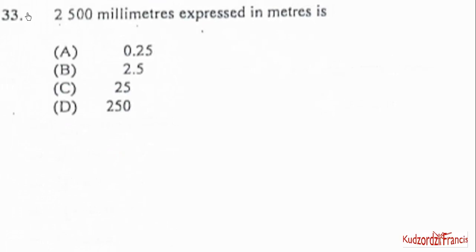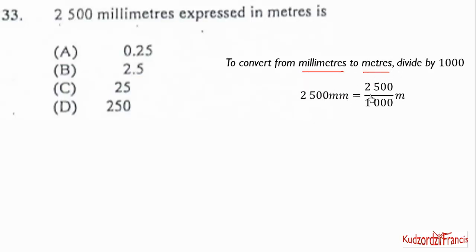So we have 2,500 mm expressed in meters. In order to move from millimeters to meters, we need to divide by 1,000. So 2,500 mm is equal to 2,500 divided by 1,000 meters. And when you are dividing by 1,000, it means you are moving backwards 3 times. So it will be here. So 2,500 mm is the same as 2.5 meters. So that will be option B.